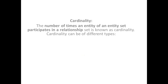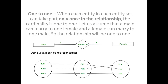Now, cardinality. The number of times an entity of an entity set participates in a relationship set is known as cardinality. Cardinality can be of different types. Number one is one-to-one cardinality: when each entity in each entity set can take part only once in the relationship, the cardinality is one-to-one.